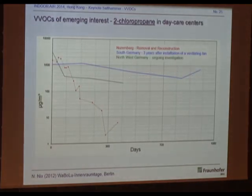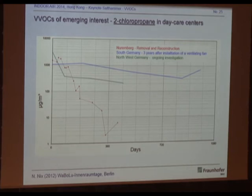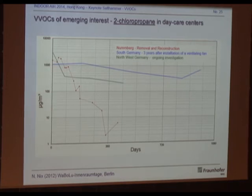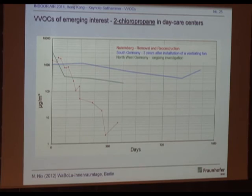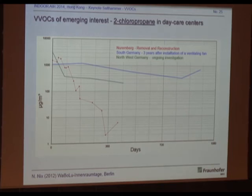Another very interesting compound: chloropropane — currently the subject of a big discussion in Germany. It is also used as a blowing agent. We see it in many daycare centers — these are data from the city of Nuremberg, who are very good at measuring these compounds. The concentrations are pretty high and persist over years. If you do not remove the source, you can install ventilation fans and do whatever you like — the concentrations remain very high. Only if you remove the source do the concentrations slowly go down. This problem may disappear because I have heard the company has substituted this compound.